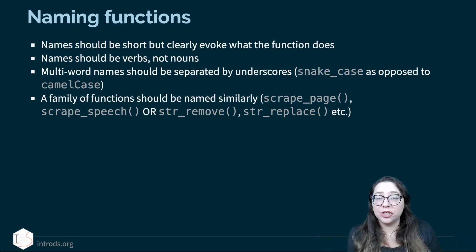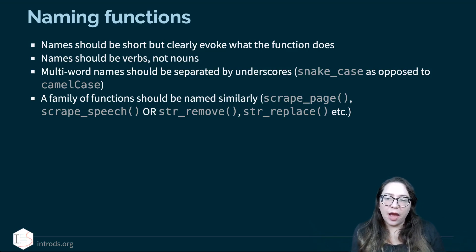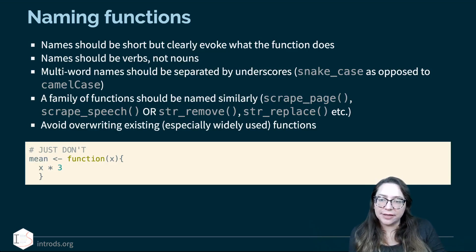You also want to avoid overwrite existing, especially widely used functions. I mean, why would you overwrite the mean function to say it takes an argument and then multiplies it by three? Just don't do things like this. It is mean and it's not useful.